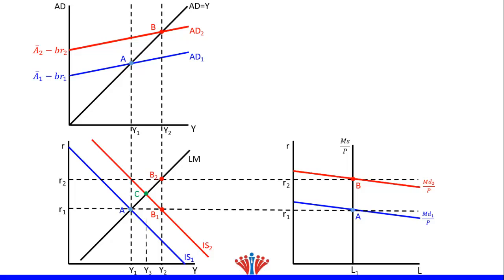Then we will draw a dotted vertical line to reflect the new equilibrium output Y3 in both the IS-LM model and the goods market. The point of intersection between Y3 and the 45-degree line in the goods market will be the new equilibrium point, labeled as point C. From the money market, the money demand curve shifted upward resulting in higher interest from R1 to R2. As interest increases, it will result in lower investment based on inverse crowding out. Consequently, aggregate demand will shift downward to AD3 crossing point C.